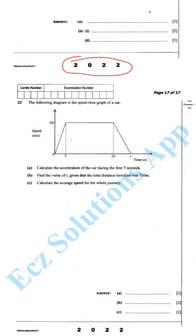As you can see, it's under question 23. So to GCE students, you find this question in an exam and it will be on question number 23. The following diagram is the speed-time graph of a car. In the x-axis we have time, and in the y-axis we have speed.